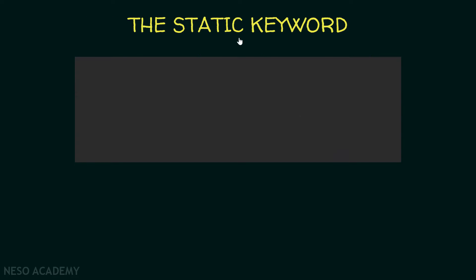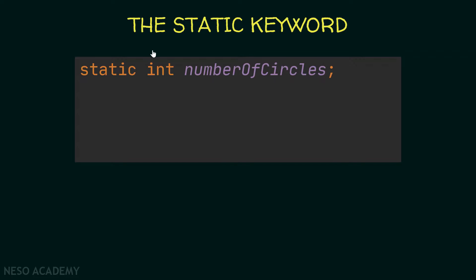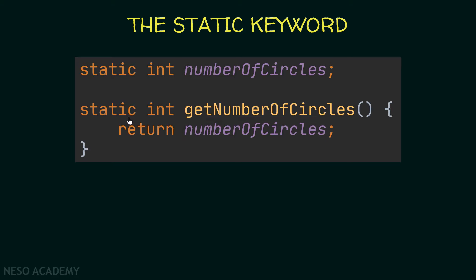Now let's see how to create static variables and methods using the static keyword. Here I'm creating a static integer variable called numberOfCircles — we simply use the static keyword before the type. And here I'm creating a static method: we use the static keyword before the return type. This method returns an integer, is called getNumberOfCircles, and returns the numberOfCircles variable. Note that we can access this variable inside the static method because it is also static.